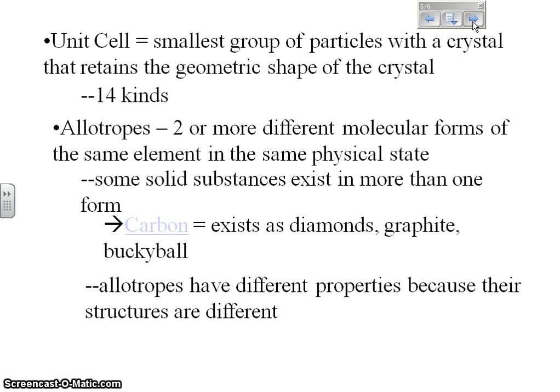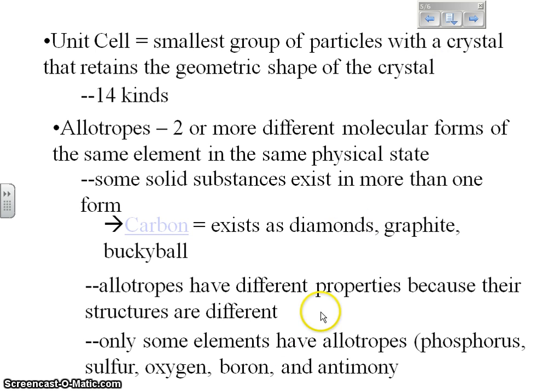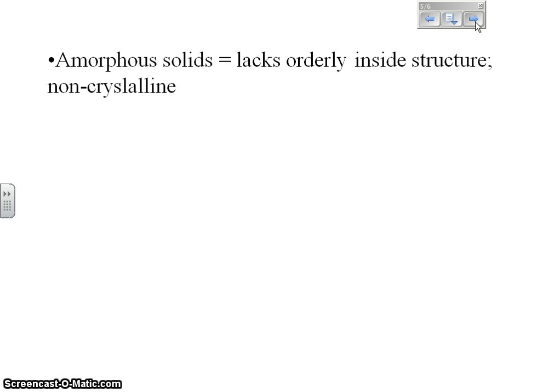Allotropes will have different properties because their structures are different. So their properties will be different based on their structures being different. For example, graphite is black, and diamonds are not black. After we shine them up, they look really nice, and they have different properties. Only some elements have allotropes. Not every element has an allotrope. Phosphorus is one. Sulfur, oxygen, boron, and antimony also are elements that will have allotropes.